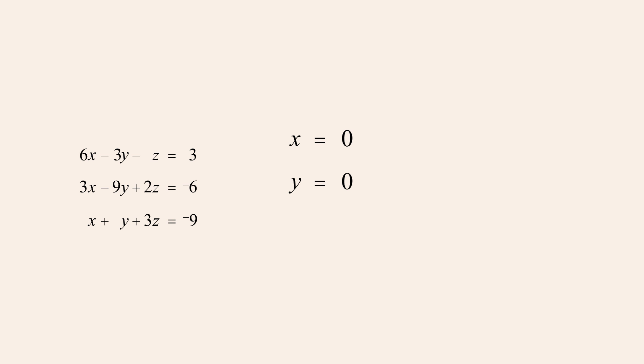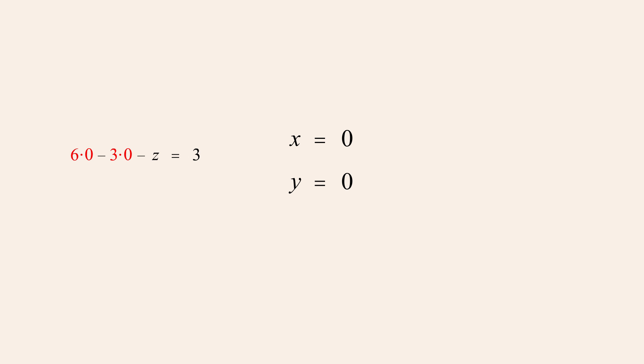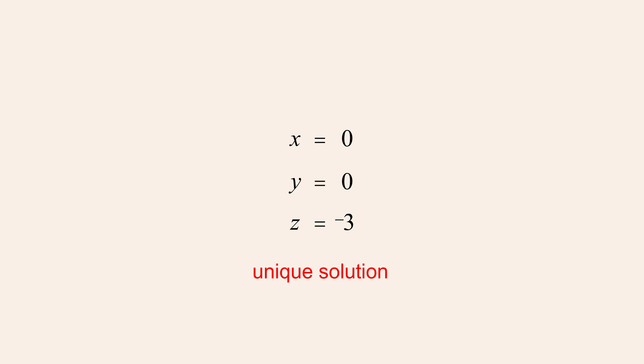Knowing the values of x and y, we can now set x and y to zero in any of the three original equations and find the value of z. Setting x and y to zero in the first equation causes the first two terms to vanish, giving us negative z equals three, or z equals negative three. So the x, y, and z values which are the solution to our system of equations are zero, zero, and negative three. Since each variable was forced to a single value, we know that the solution is unique. This solution can be written as the ordered triple zero, zero, negative three.